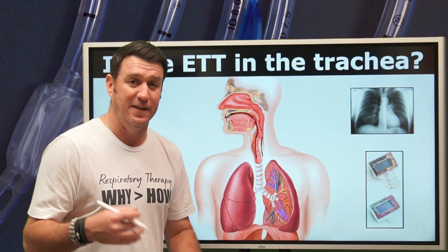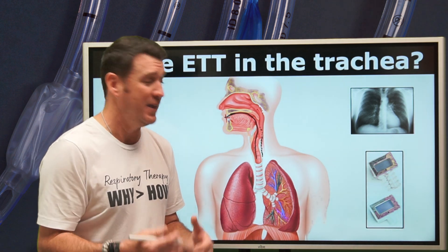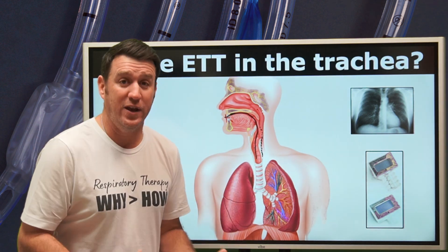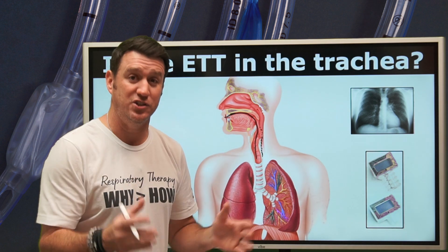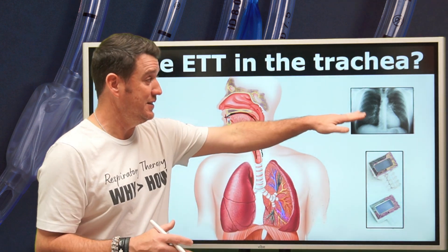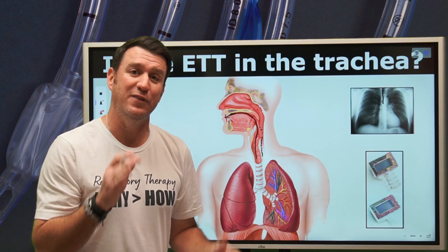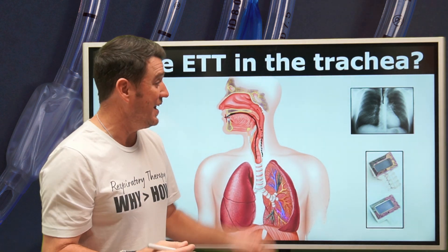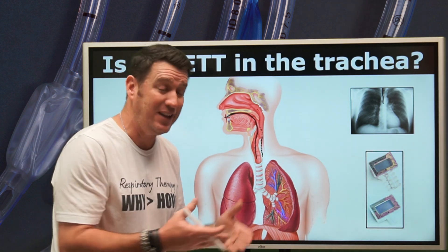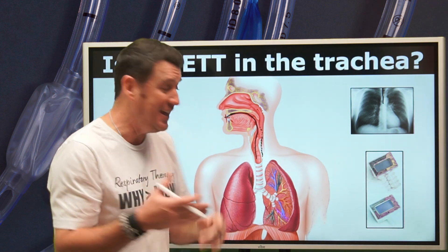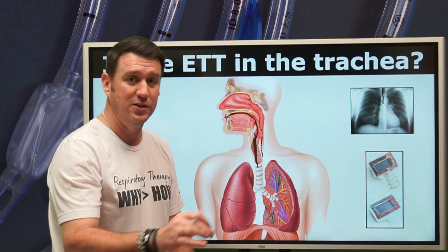I want to focus on colorimetry, because we often use those to identify if we are in the trachea. Some people might say they'd look at the x-ray, but we have to remember: the x-ray is a two-dimensional image. From front to back, the tube may look midline in the trachea, but from the side it could actually be in the esophagus. So chest x-ray cannot be used to confirm tracheal intubation — that's a key point.